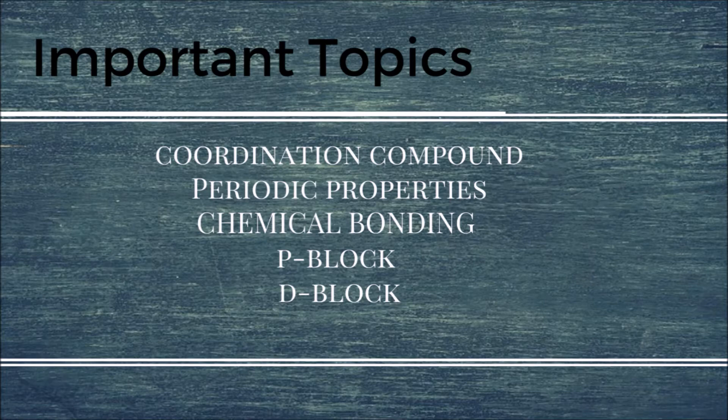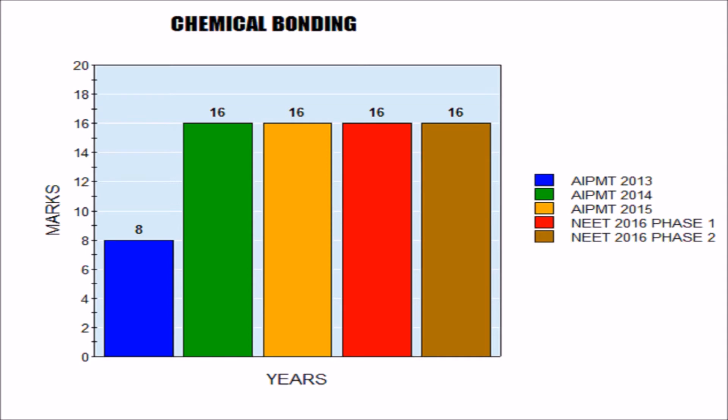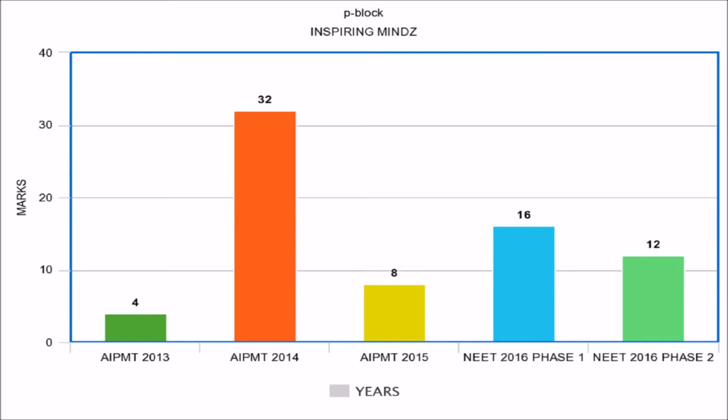Now let's discuss the marks distribution for chemical bonding. In AIPMT 2014, 2015, NEET 2016 Phase 1, and NEET 2016 Phase 2, the weightage was 16 marks, while in AIPMT 2013 the weightage was 8 marks.